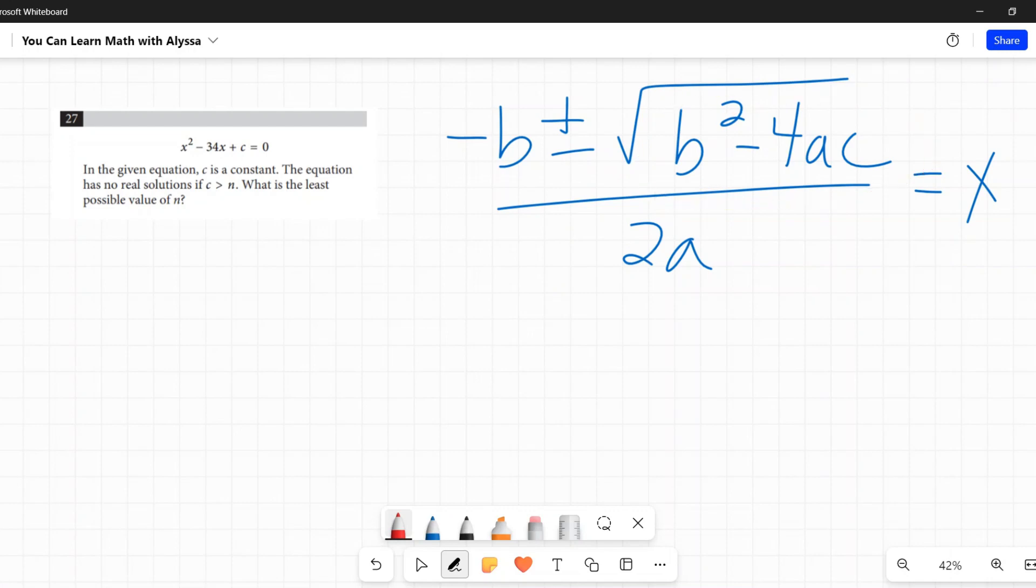...is called the discriminant. If this number is negative, this quadratic has no real solution because it would be the square root of a negative number, and that's imaginary. We can't have a real number that is a negative square root. Negative square roots are imaginary numbers. So if that b² - 4ac is...